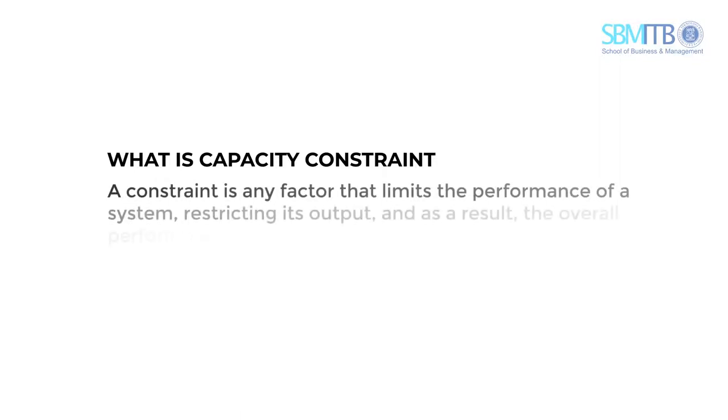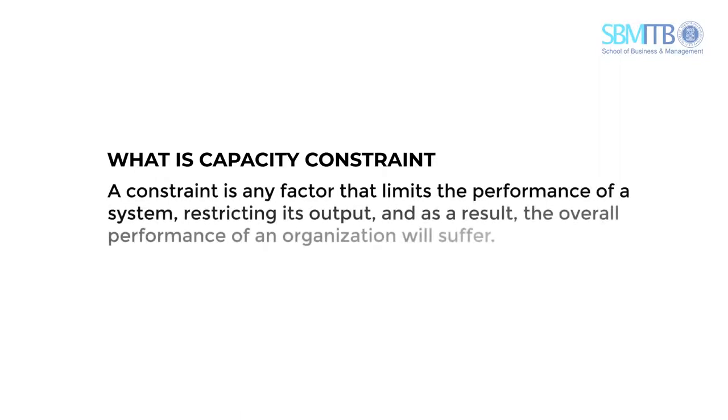Now let's discuss capacity constraint. In operations management, a constraint is any factor that limits the performance of a system, restricting output and causing the overall performance of an operation to suffer. A number of machines may be in sequence on a manufacturing line, yet any one may not be able to process as many units per hour as the others. The capacity will be constrained by this under-producing machine, which may create a bottleneck in the process.